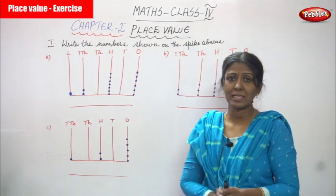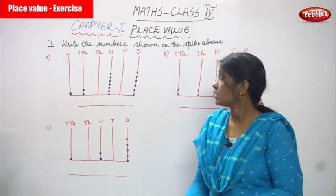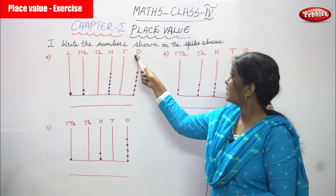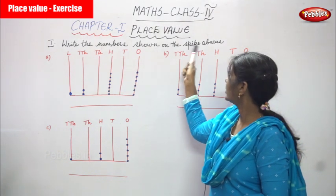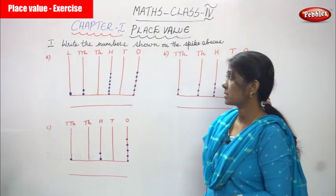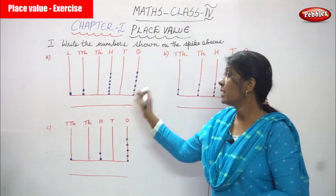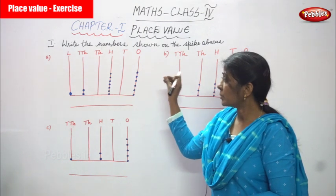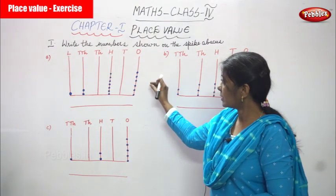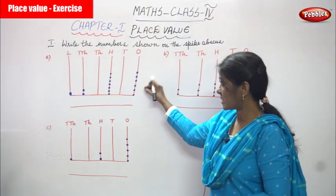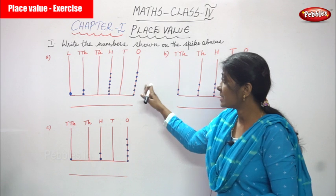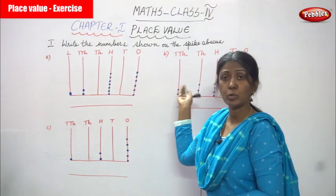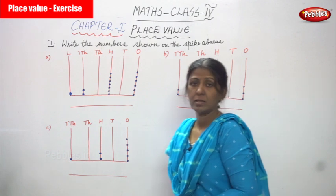Now, we are going to start the exercises in chapter 1. First Roman number: write the numbers shown on the spike abacus. This is an abacus figure. They have given the dots on the lines, and we have to count the dots on the line. Finally, you have to write it in the blank.